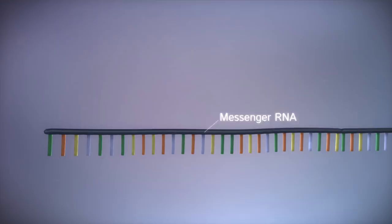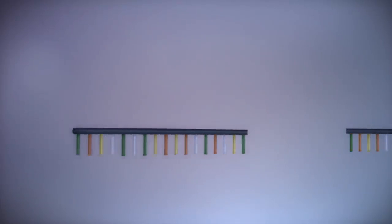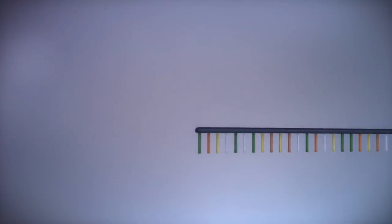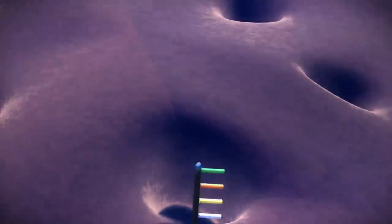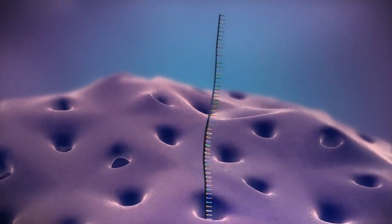Before the messenger RNA can be used as a template for the production of proteins, it needs to be processed. This involves removing and adding sections of RNA. The messenger RNA then moves out of the nucleus into the cytoplasm.